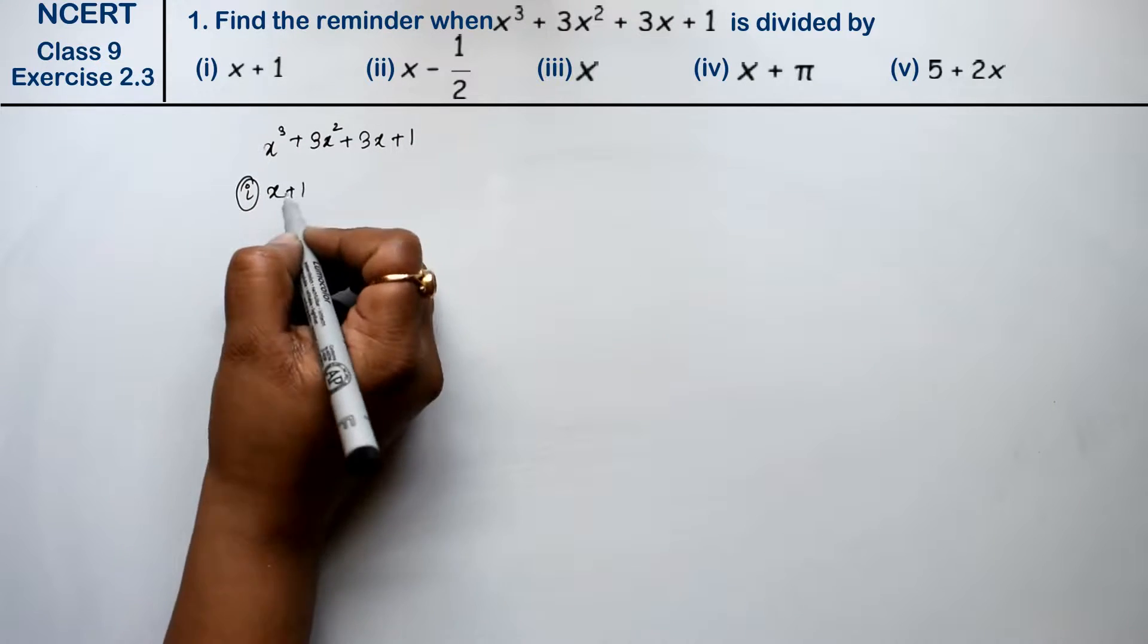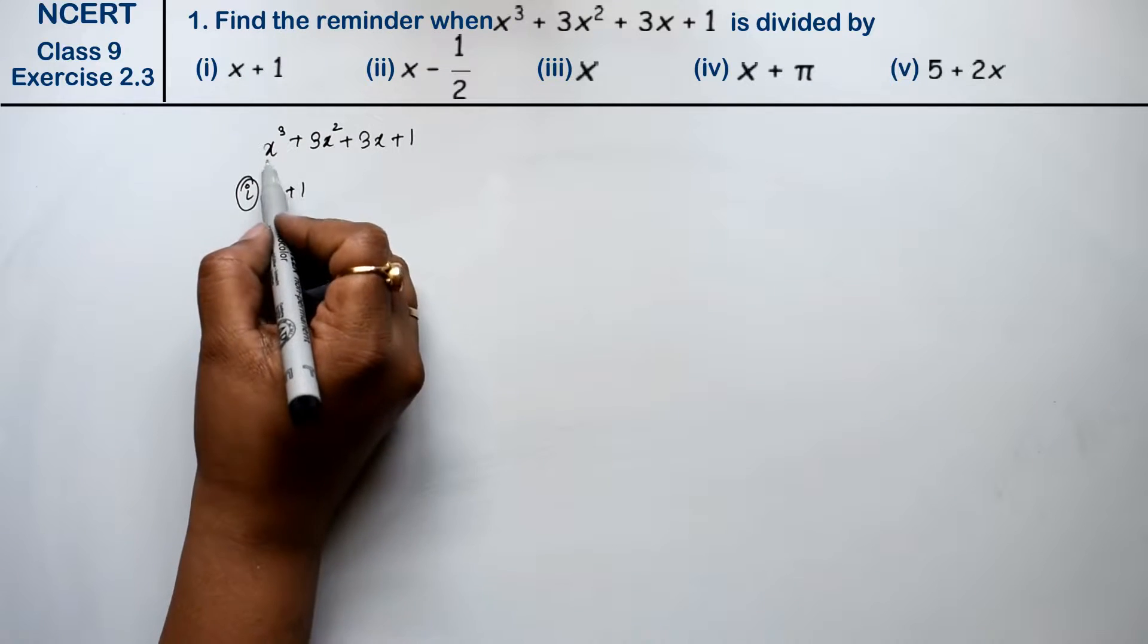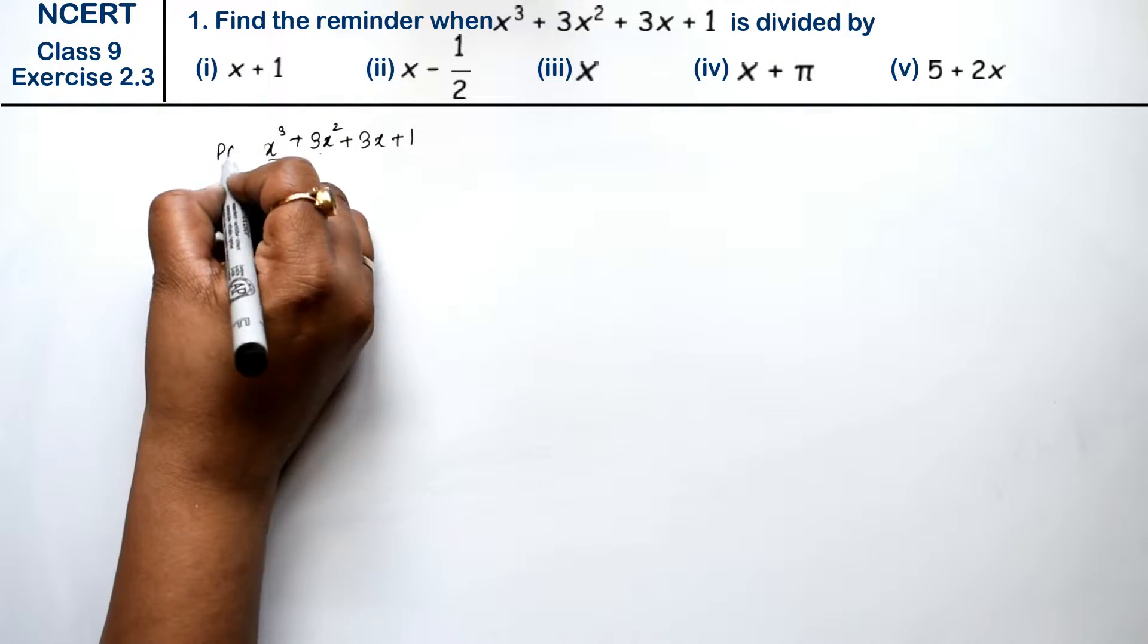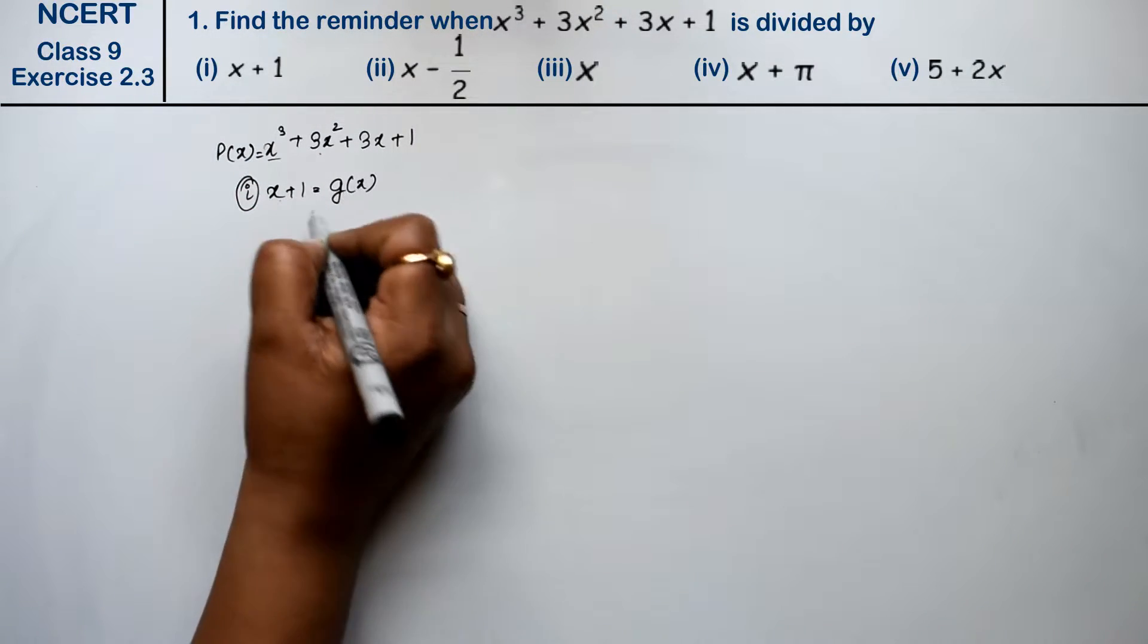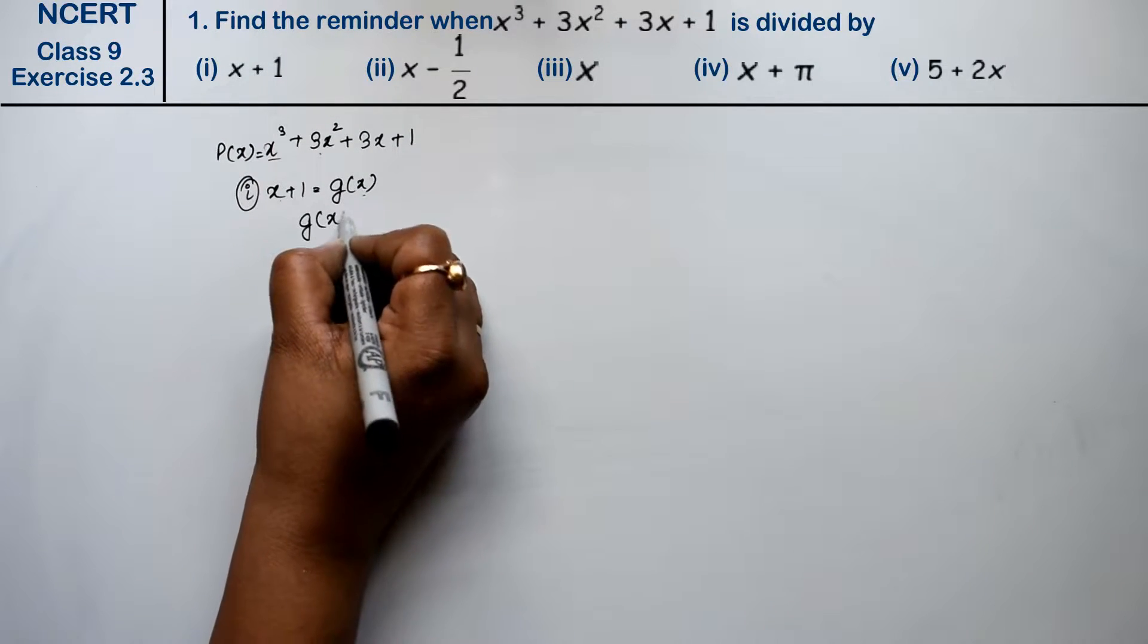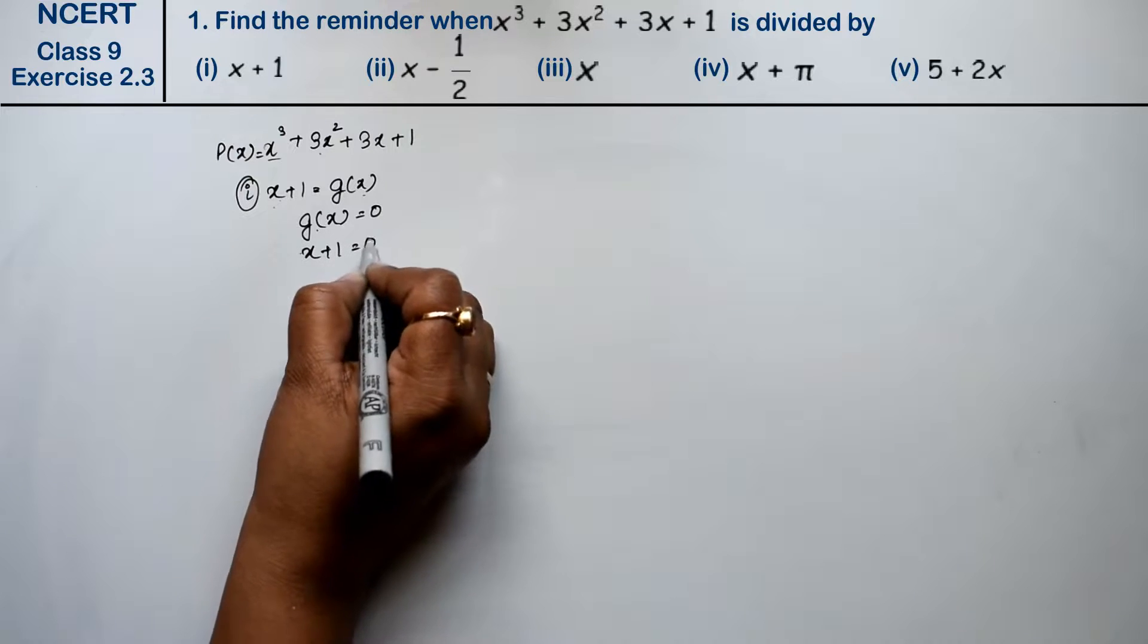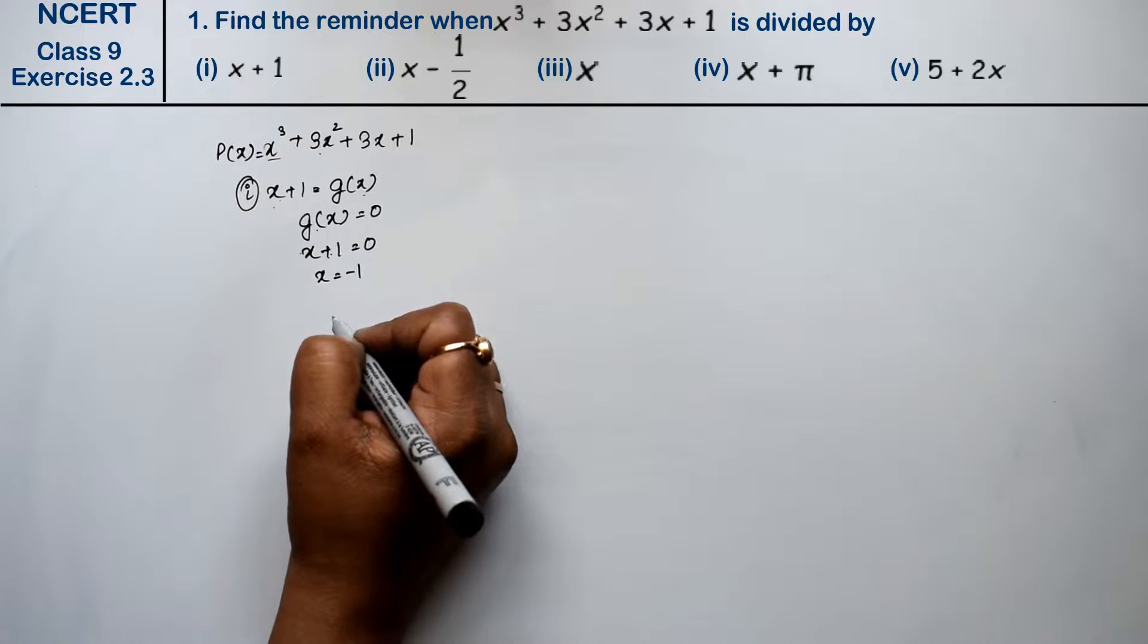We use remainder theorem. When we divide this by this and if it is, find the remainder. We will call this p(x) and this we will call g(x). In remainder theorem, we call this which we divide by equal to 0. So if g(x) is equal to 0, then what will happen? x plus 1 is equal to 0, so x value will be minus 1.